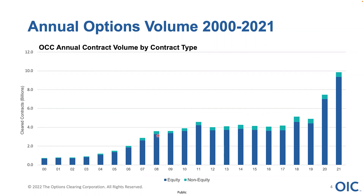2008 was the financial crisis — the housing crisis. 2011 was the sovereign debt crisis. 2020 we had COVID. We're also dealing with what's going on in Ukraine and an election. 2020 was a record year at the time where we cleared and settled nearly seven and a half billion contracts. Last year we set another record where we cleared and settled nearly 10 billion contracts. Currently we are on track to at least meet or exceed last year's record volume number, averaging roughly 41.5 million contracts per day, and 48.5 million in November alone.